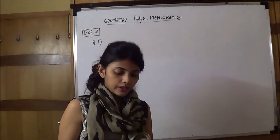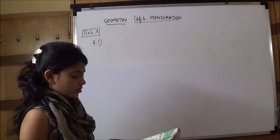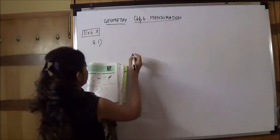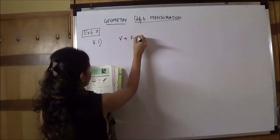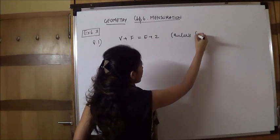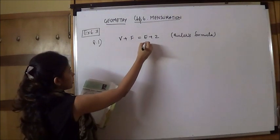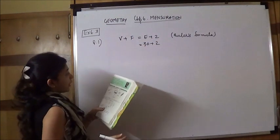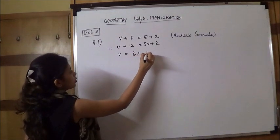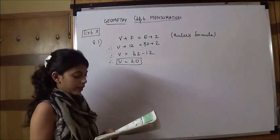Now, question two relating to Euler's formula we have done earlier. V plus F equals 2 plus E. It is a very simple formula-based sum and one mark sum which you get in the exam. V plus F equals E plus 2. This is Euler's formula. We are given E is 30 and F is 12. We do not know V. So V equals 20, 32 minus 12. Therefore V equals 20, that is number of vertices is 20.